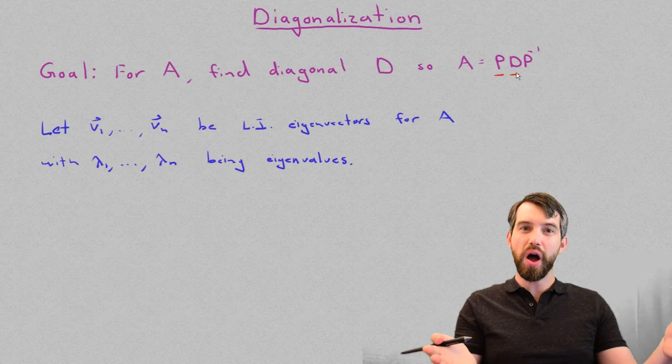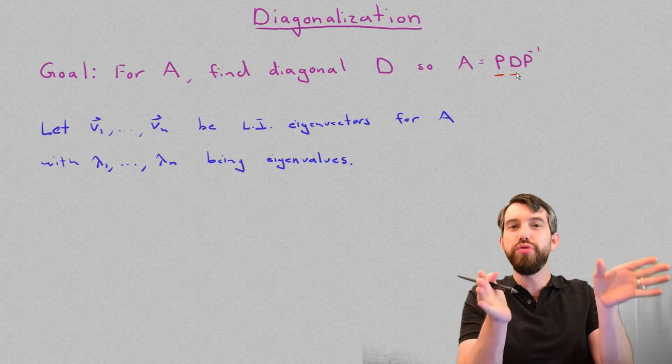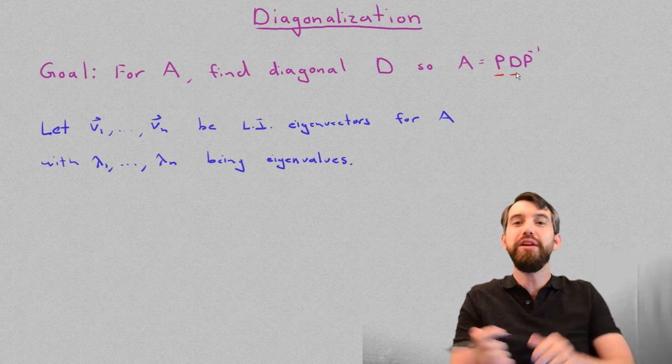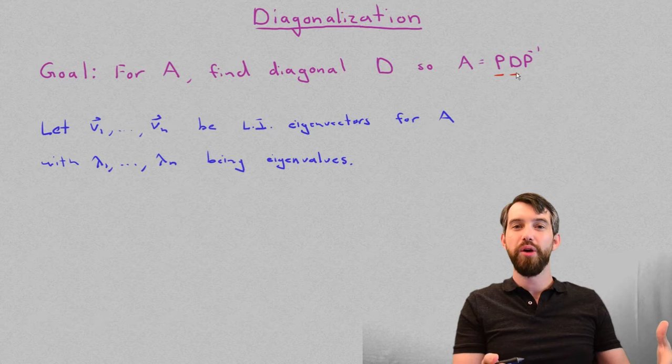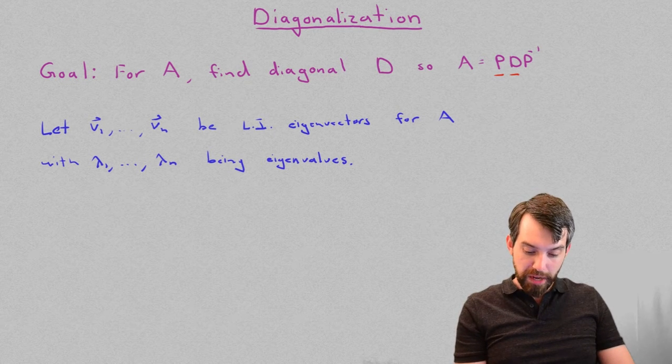And the reason is, if you've got n linearly independent eigenvectors, I can put them into the columns of a matrix that will be invertible. A matrix where I'll be able to figure out what its inverse is going to be. So that's going to be my process.